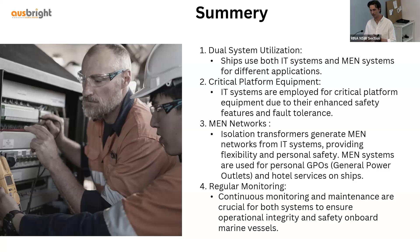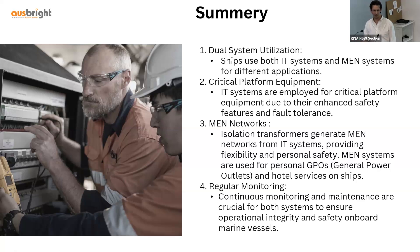Critical platform equipment is always going to be on an IT Earth system for the protection it provides. Regardless of either system, electrical systems degrade — especially on ships due to heat, seawater, and harsh conditions. Insulation will break down; nothing lasts forever. Regular maintenance, monitoring, and testing of earthing systems are all crucial to the integrity of the system. If you just set and forget, the system is not going to save you completely — you always need a level of maintenance and continuous monitoring.